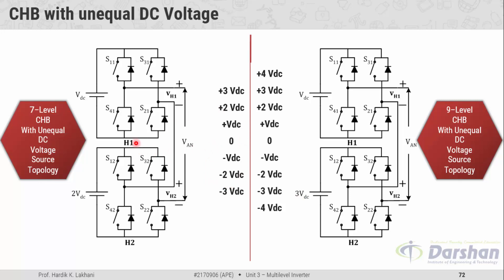To produce the first level of magnitude zero, all switches from the first cell H1 and all switches from the second bridge H2 are kept off, so the output of both bridges is zero and the net output is zero. To produce plus VDC, the diagonal switches S11 and S21 of H1 are triggered simultaneously while keeping S31 and S41 off, giving bridge one output of VDC. The second bridge output should be zero, so S12 and S32 are turned on simultaneously to give zero from bridge two, resulting in VDC plus zero equals VDC.